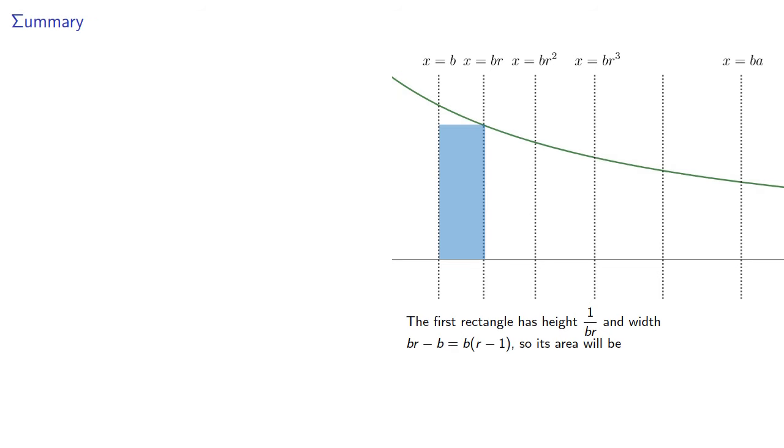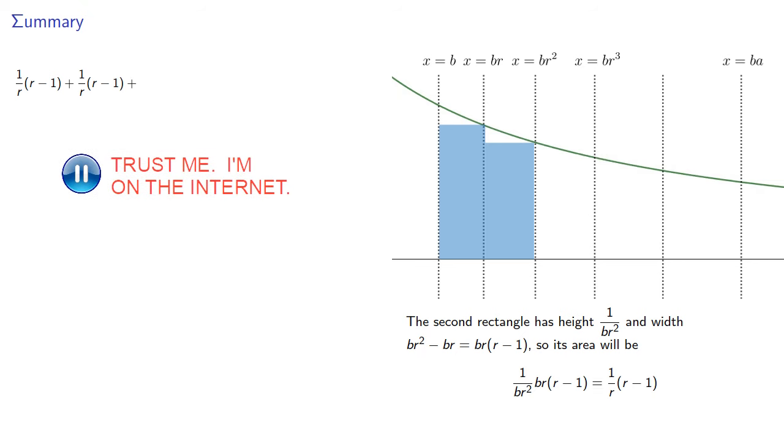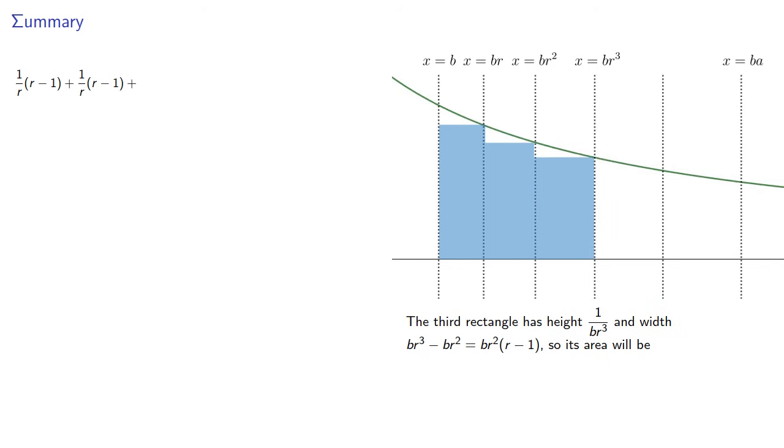So the first rectangle has height 1 over br and width br minus b, that's b times r minus 1, so its area will be r minus 1 over r. The second rectangle has height 1 over br squared and width br squared minus br, that's br times r minus 1, so its area will be r minus 1 over r. The third rectangle has height 1 over br cubed and width br cubed minus br squared, that's br squared times r minus 1, so its area will be r minus 1 over r. And so the total area of all the rectangles will be n times r minus 1 over r.